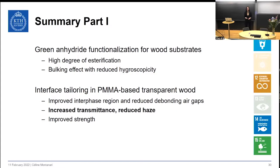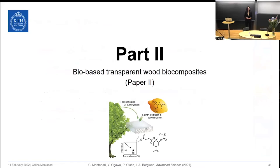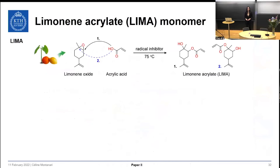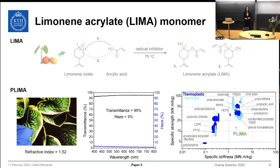However, one of the main drawbacks of PMMA is that it is fossil-based and therefore does not comply with sustainable development. Therefore, in this thesis, we developed a fully bio-based transparent wood biocomposite based on a new bio-based polymer matrix. We synthesized a new monomer via ring-opening acrylation of renewable limonene oxide, resulting in the limonene acrylate monomer, also termed LIMMA. When polymerizing LIMMA, we obtained a very transparent PLIMMA cross-linked polymer, which has a refractive index closer to that of the wood substrate compared to PMMA. PLIMMA has high transmittance, low haze, and appears very clear.